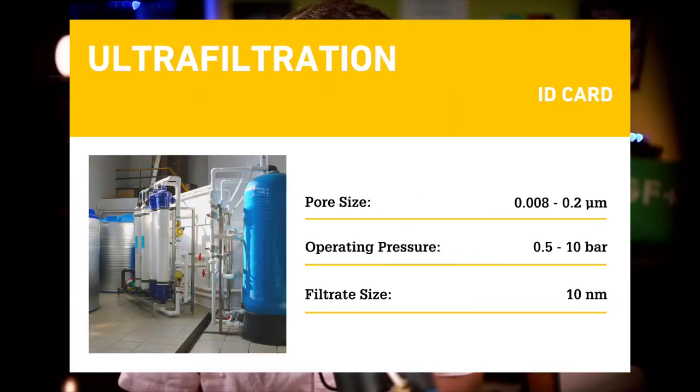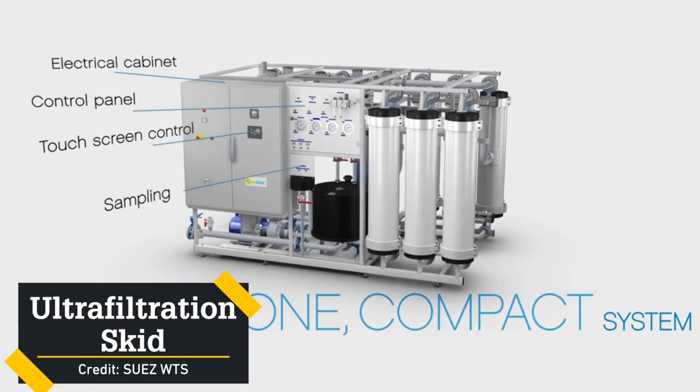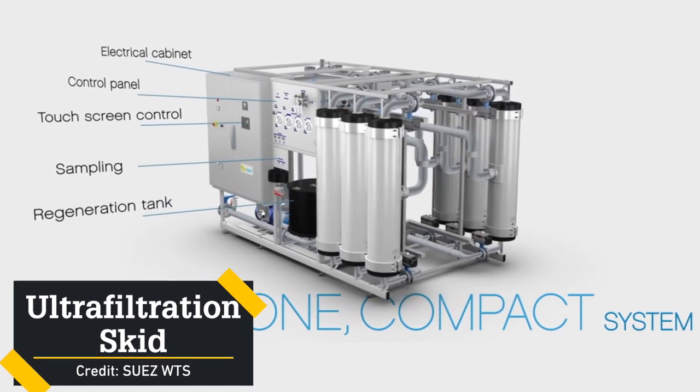Ultrafiltration, or UF, membranes have pore sizes varying from 0.008 to 0.2 micrometers and operate at pressures from 0.5 to 10 bars. There is an overlap between MF and UF — no regulation clearly defines the boundary, so it depends on suppliers' commercial freedom. UF and MF are often clustered together as they have similar applications. From UF onward, membrane treatments can be considered to defeat infection, as ultrafiltration adds virus removal to the list, and finishes off colloid removal — also taking proteins or carbon black out of water.